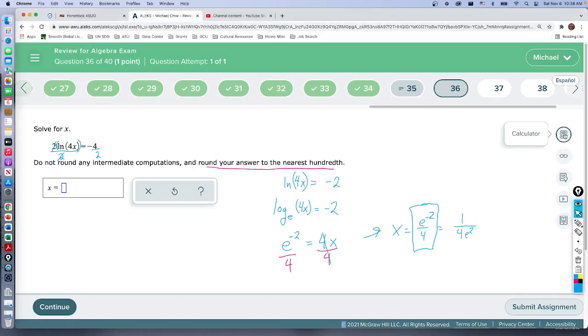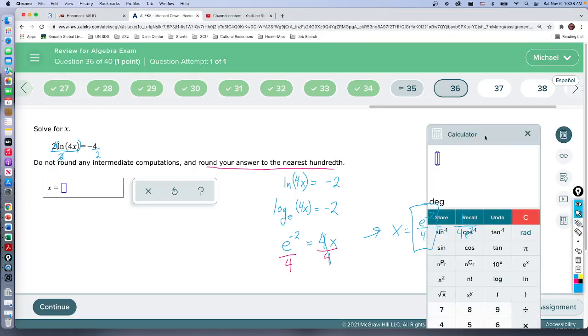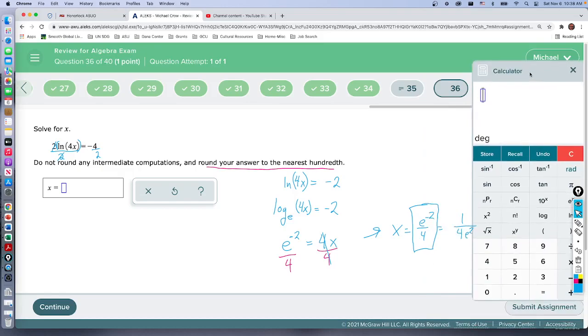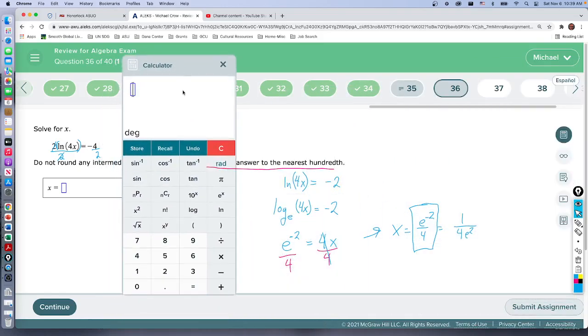So let's get our calculator out here. There we go. So let's put this in as e to the minus two—where's our... here's e to the x. Minus two, and then we're going to divide that by four.